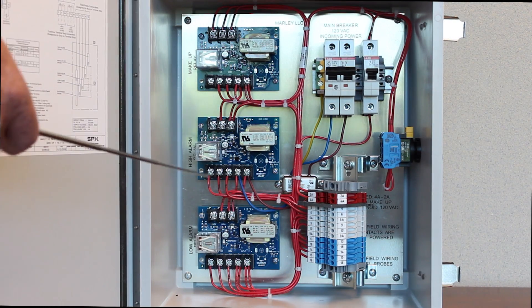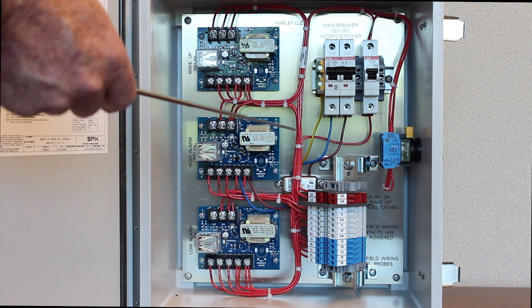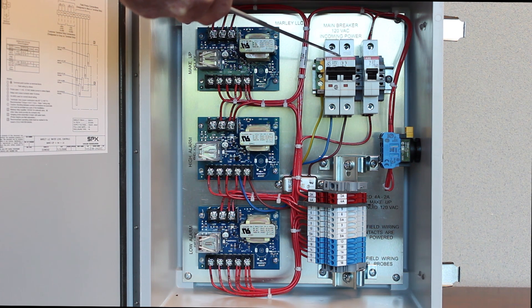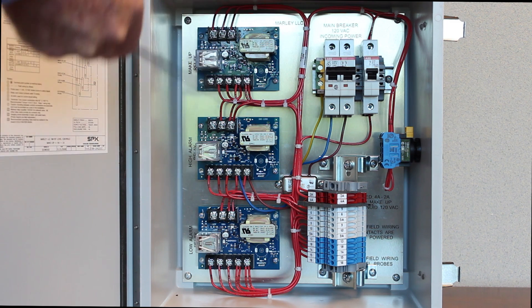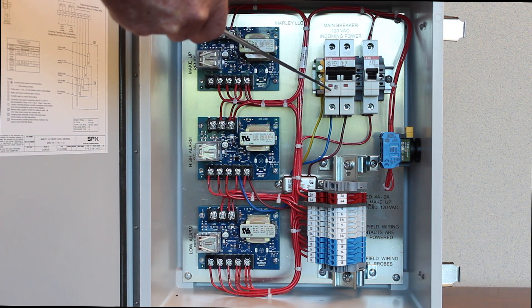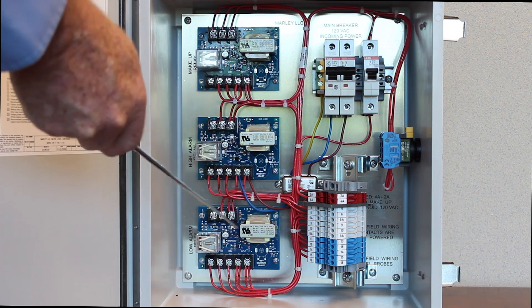Inside the enclosure I want to point out the internal components. We have a main circuit breaker that receives the 120 volt AC power supply from the customer, or in some cases it might be a 220 volt supply. This main circuit breaker has thermal magnetic short circuit protection providing protection for the control panel. Once the power flows through the circuit breaker it flows to the individual cards here.